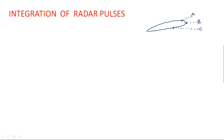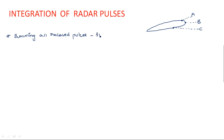We have received three different echo pulses with different echo strength signals. But how can we estimate which pulse belongs to which target? First, since we are receiving more than one pulse, we need to integrate all the signals. Integrating all the signals improves the accuracy of the radar system.